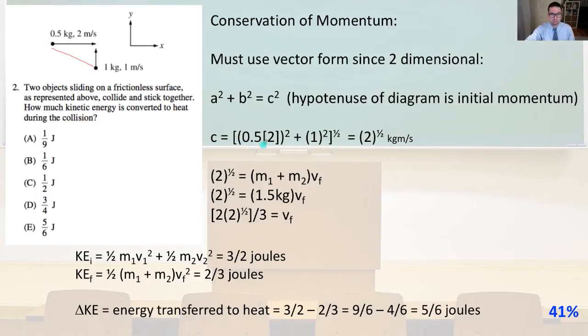So we have right here is what we're calculating. And C is going to equal 0.5 times 2, that quantity squared right there, plus 1 squared, that's 1 and 1, that's our momentum in that direction. And that whole quantity square root and that is going to equal the square root of 2 kilogram meters per second. So if that's our initial momentum, we know that the final momentum is going to have to equal the sum of the two masses because they stick together times the final velocity. So then the square root of 2 is going to equal 1.5 kilograms, that's 1 kilogram plus 0.5 kilograms, times the final velocity. So 2 times the square root of 2 divided by 3 equals the final velocity.